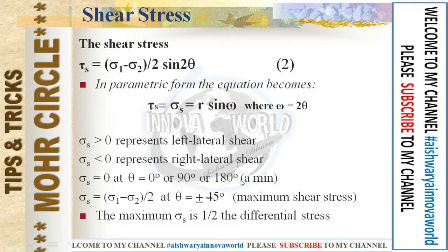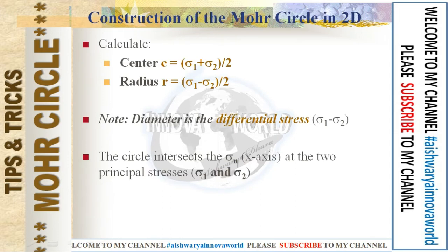Now comes shear stress. The shear stress formula is tau_s = (sigma_1 − sigma_2)/2 · sin(2θ). Similarly, we studied that (sigma_1 − sigma_2)/2 is the radius, so tau_s = R·sin(ω). Regarding minimum and maximum conditions — commonly asked in exams — shear stress is minimum when theta is 0°, 90°, or 180°, and maximum when theta is ±45°, giving tau_max = (sigma_1 − sigma_2)/2.